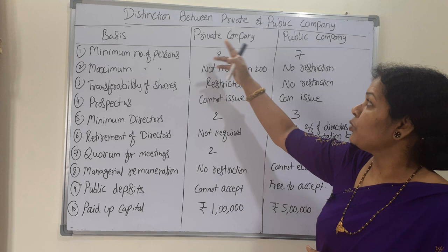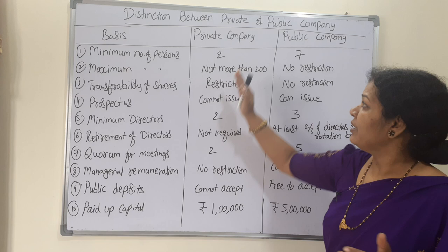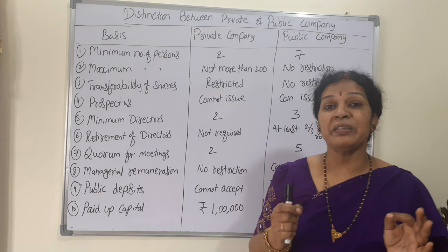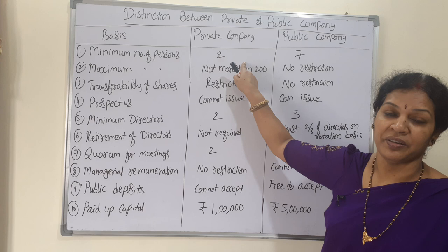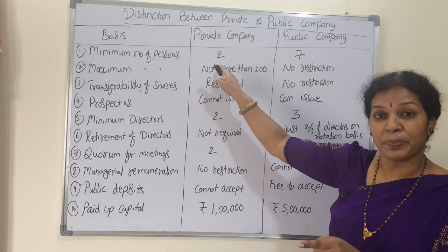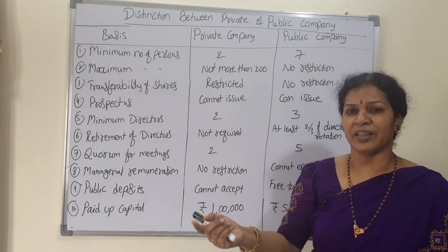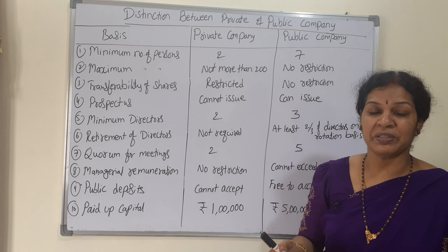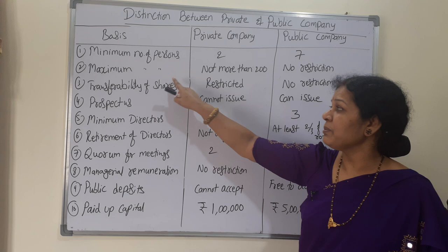The first point of distinction is the minimum number of persons required to start a company. For a private company, a minimum of two members are required. For a public company, a minimum of seven members are required. So minimum members: private company two, public company seven.